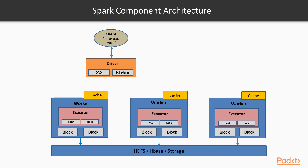Workers run a Spark Application as distributed processes on the cluster of nodes. Typically, a worker node hosting the executor process has a finite or fixed number of executors that can be allocated at any point in time. Therefore, a cluster with a known number of nodes has a finite amount of executors that can be allocated to run Spark tasks.